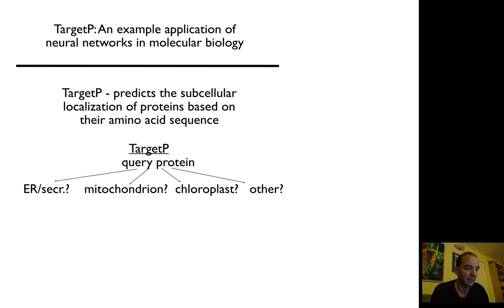It doesn't predict all sub-cellular localizations, it just predicts one of four options: it can be predicted to go to the ER or secretory pathway, the mitochondria, the chloroplast, or somewhere else. The input is a protein sequence, so you give it a protein and it predicts the localization.